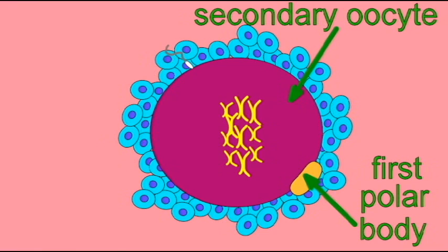When a sperm penetrates the secondary oocyte, this is then the stimulus for this oocyte to divide to produce the ovum.